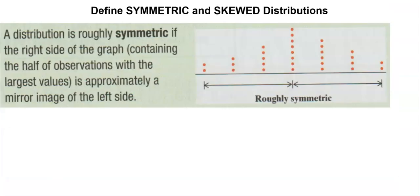Now what makes dot plots really cool is we can talk about our skew, the shape of our graph. Our distributions—we don't say symmetric in this class. I like to call them weasel words. We're always going to say something like roughly symmetric if the right side of the graph containing half of the observations is approximately the mirror image of the left side.